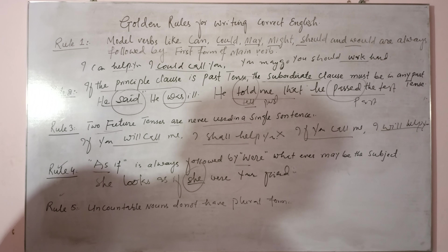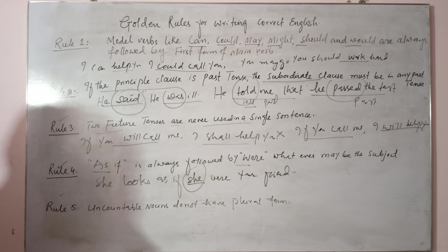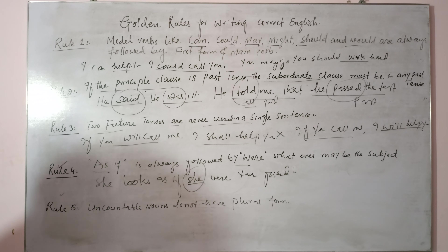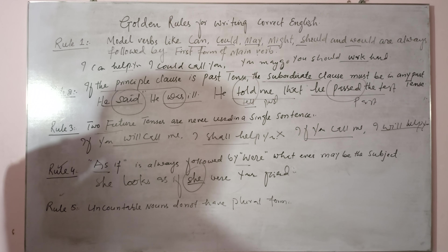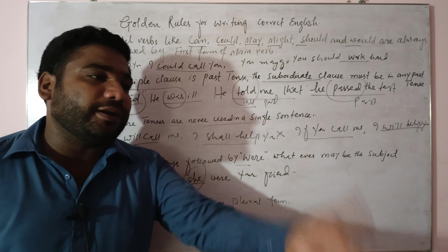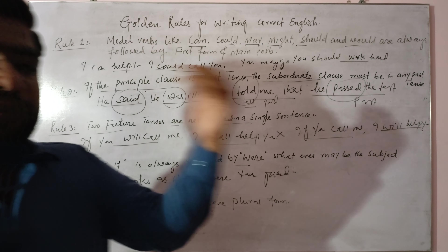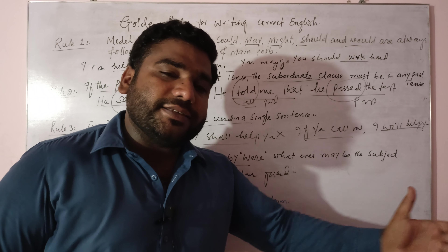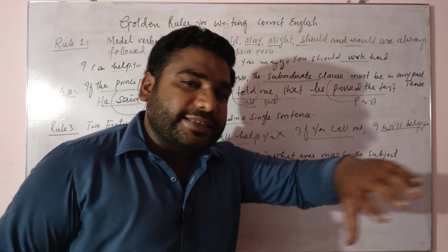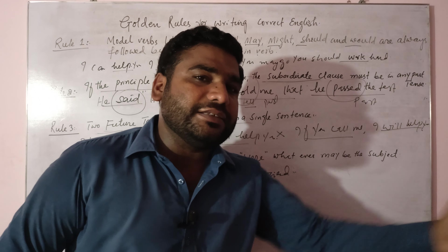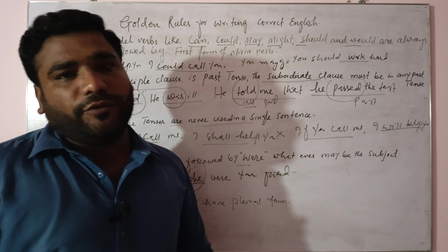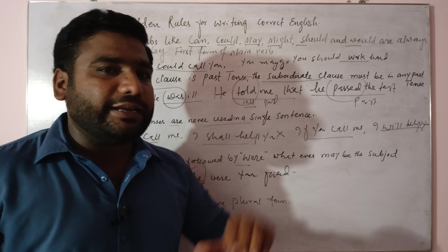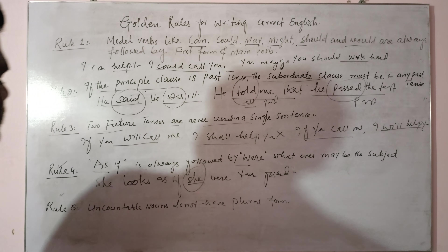Rule number five: uncountable nouns do not have a plural form. Nouns ki do aqsam hain quantity ke lehaz se: countable aur uncountable. Countable nouns jin ki hum ginti kar sakein — jaise book/books, pen/pens, fan/fans, school/schools, boy/boys, girl/girls, mobile/mobiles. On the other hand, uncountable nouns do not have a plural form and are not preceded by the article 'an'.